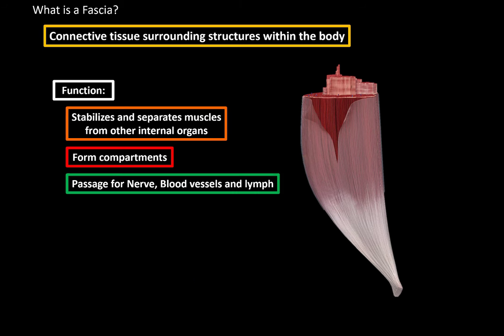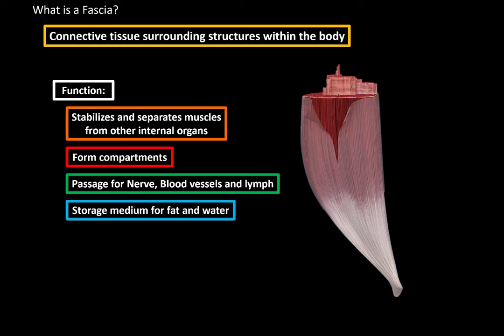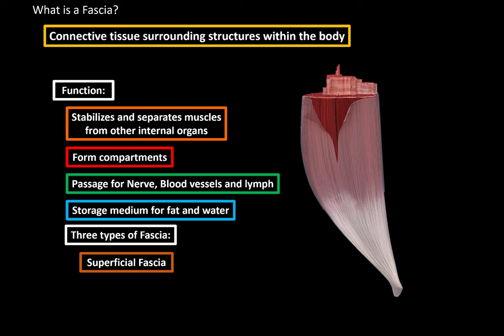Fascia also forms a passage for nerves, blood vessels, and lymph. This is important to keep in mind, especially in people with chronic neck pain on constant pain medication — it doesn't necessarily have to be your muscles that's ill, it could be the fascia. So stretching exercises are important factors which can stretch the fascia and help loosen it up. Fascia also functions as a storage medium for fat and water. And lastly, there are 3 types of fascia that you need to know: the superficial fascia, the deep fascia, and the visceral fascia.